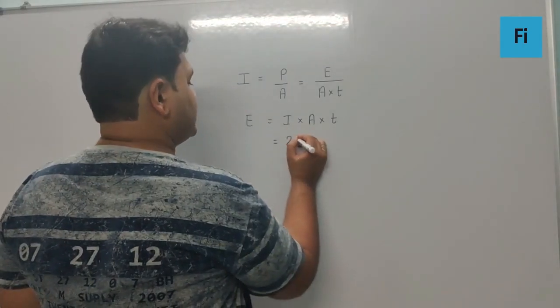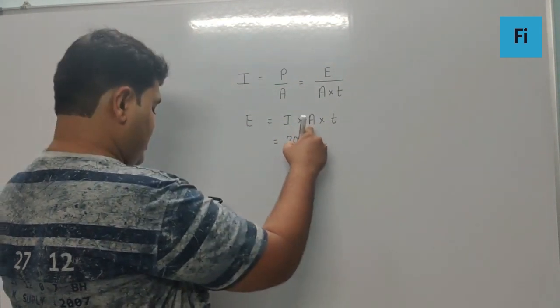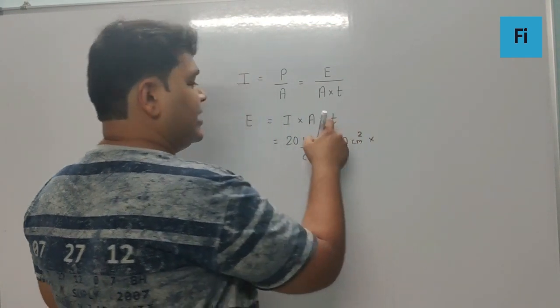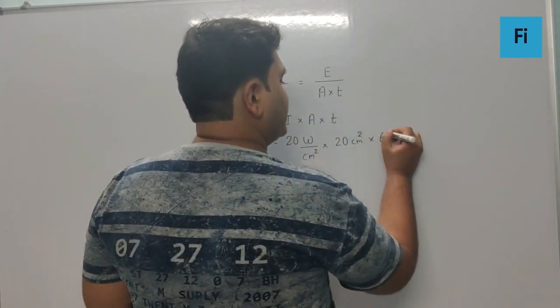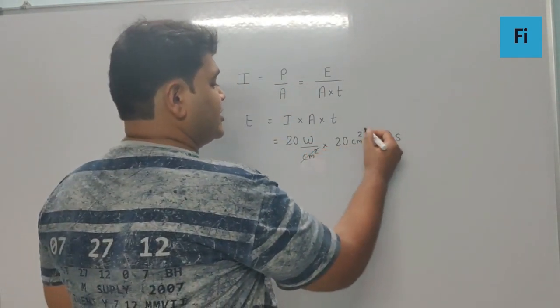So if we substitute the values, we get intensity given as 20 Watt per centimeter square, area is given as 20 centimeter square, and time is given as 1 minute which I will write as 60 seconds. So here centimeter square gets cancelled.